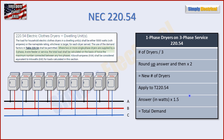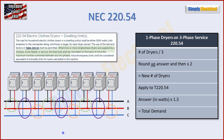With nine dryers, each connected to only two phases, you end up with three dryers between A and B, three between A and C, and three between B and C. The maximum between any two phases is three, and twice that is six — which is exactly what our formula gives: 9 ÷ 3 = 3, rounded up if needed, times 2 = 6 new dryers. So we apply 6 dryers to table 220.54.